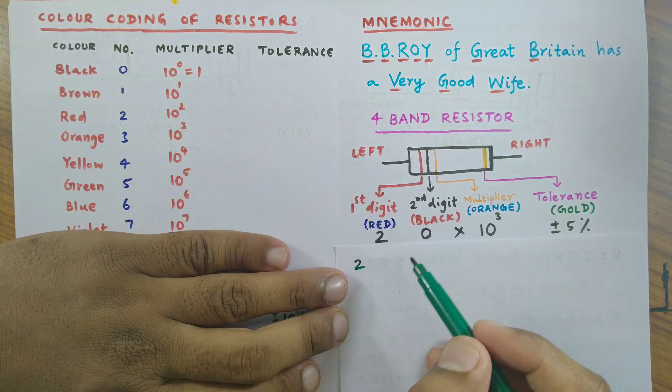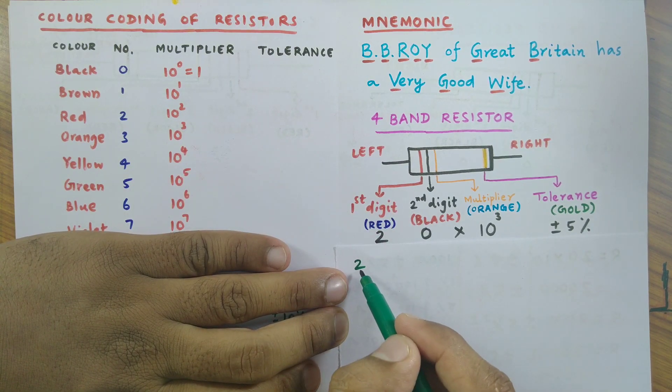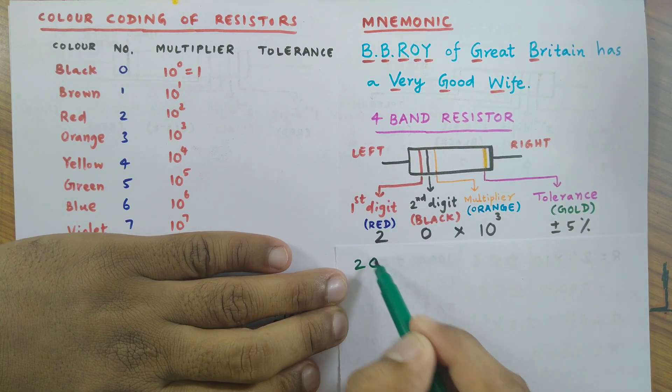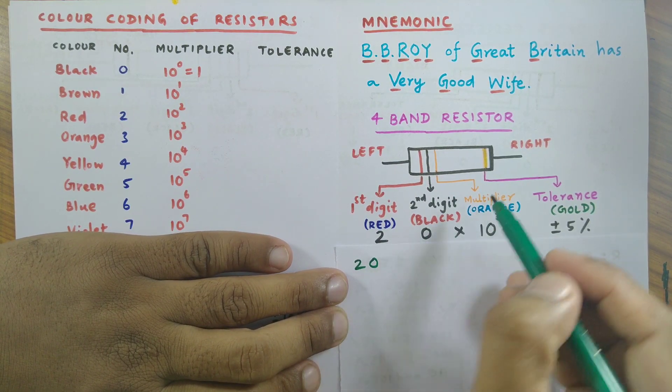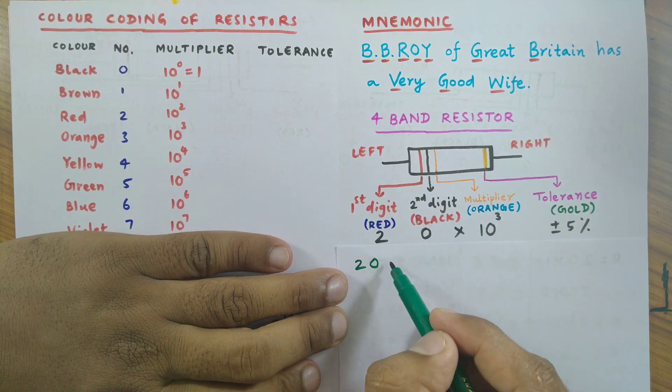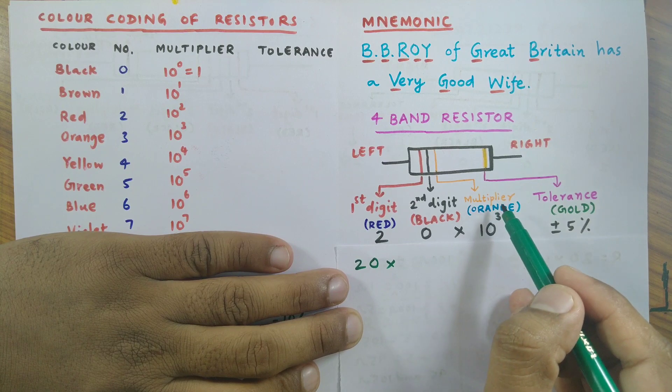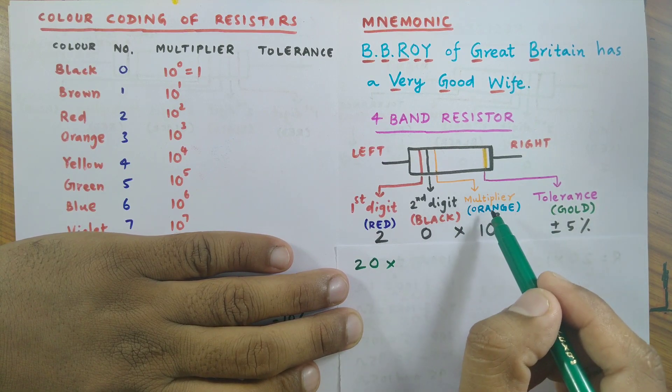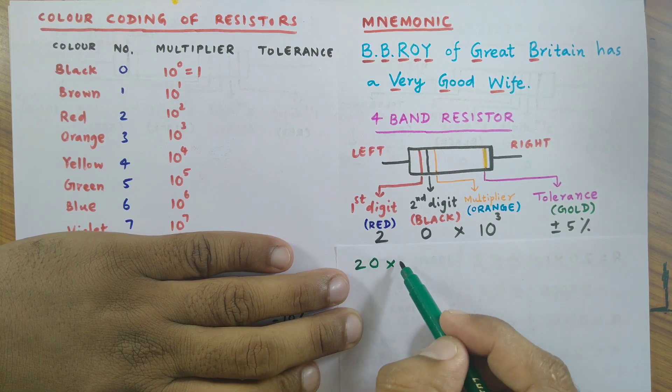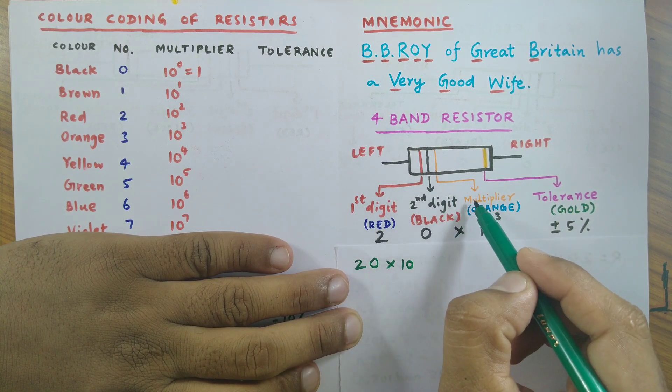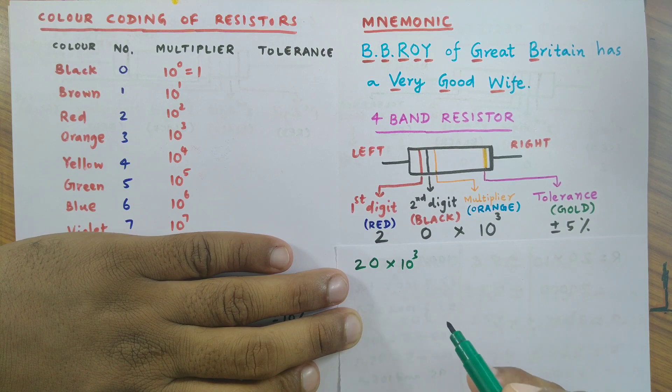The second ring is black in color, so we take a zero as the second digit. Then to write the multiplier, we put a multiplication sign, then we raise the value to the power of 10. The third ring is orange, so we raise it to the power of three, 10 to the power of 3.